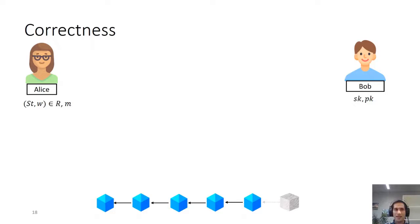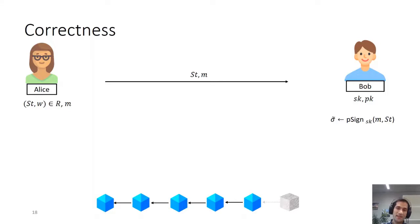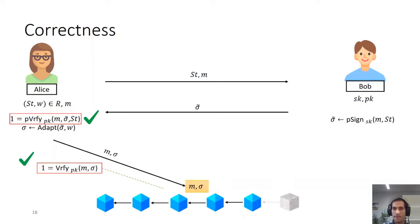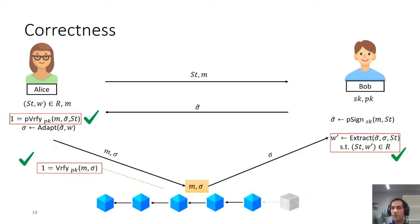Correctness simply states that if everybody behaves honestly, the algorithms behave as described. More precisely, Alice sends a statement and message to Bob, Bob generates a pre-signature honestly, Alice verifies—p-verify returns one—Alice then adapts this pre-signature to a full signature which is indeed valid, and Bob, by seeing the full signature, can extract a witness which is in relation with the original statement shared by Alice.